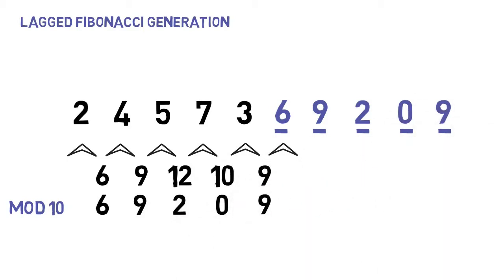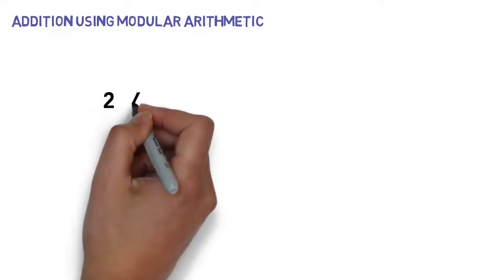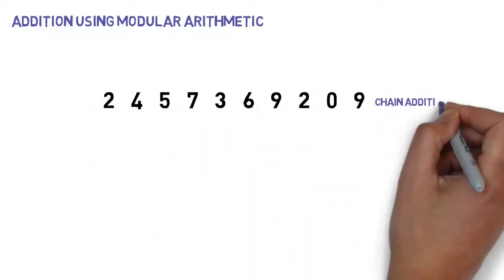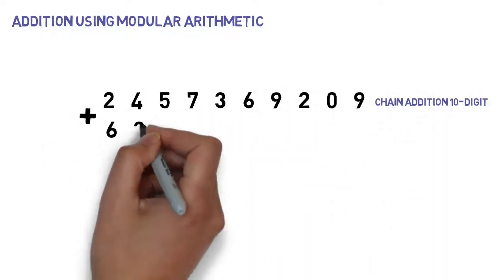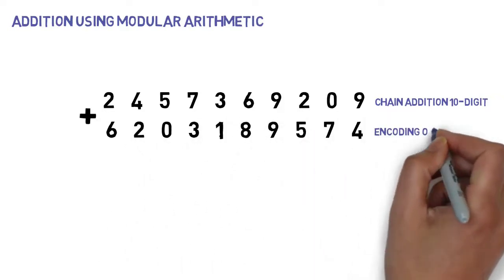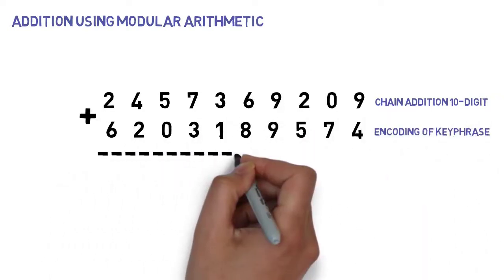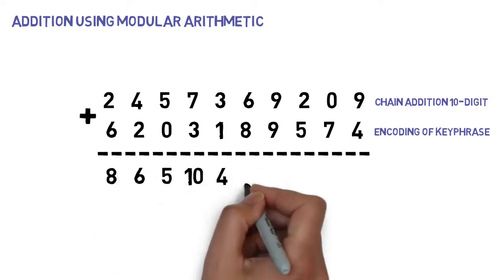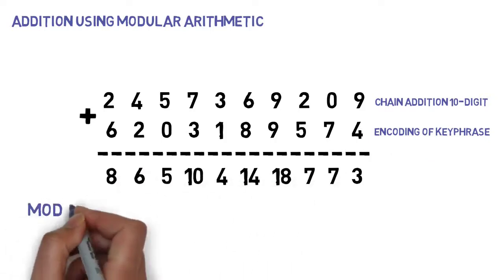After that, we're going to perform digit-by-digit addition of the 10-digit number we just produced and the encoding of the first half of our keyphrase, while also using modular arithmetic. So after adding up each two digits, we perform a mod-10 operation and end up with the following sequence.